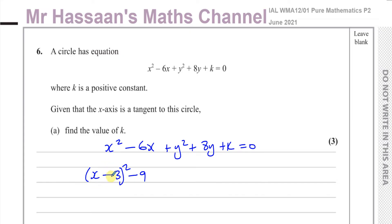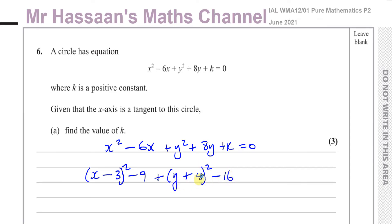This gives me x squared minus 6x plus 9 minus 9, which leaves x minus 3 squared minus 9. Then I've got plus y plus 4 squared — taking half of the coefficient of y, which is 4 — and then take away the square of that term, which is 16. So that gives me y squared plus 8y plus 16 minus 16, leaving y plus 4 squared minus 16. So x minus 3 squared minus 9 equals x squared minus 6x, and y plus 4 squared minus 16 equals y squared plus 8y.